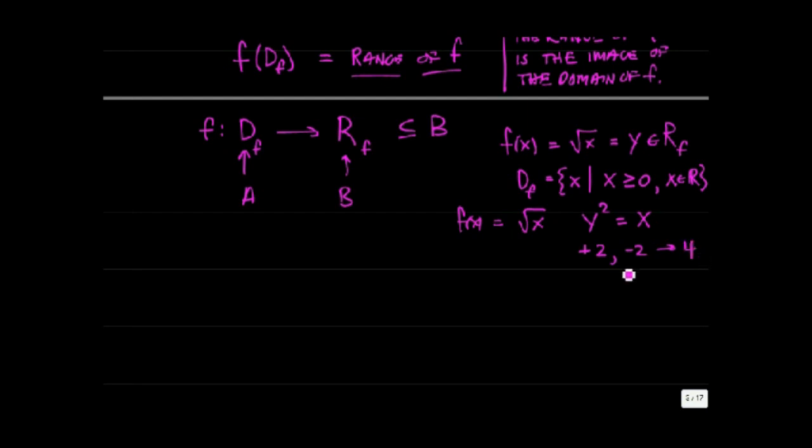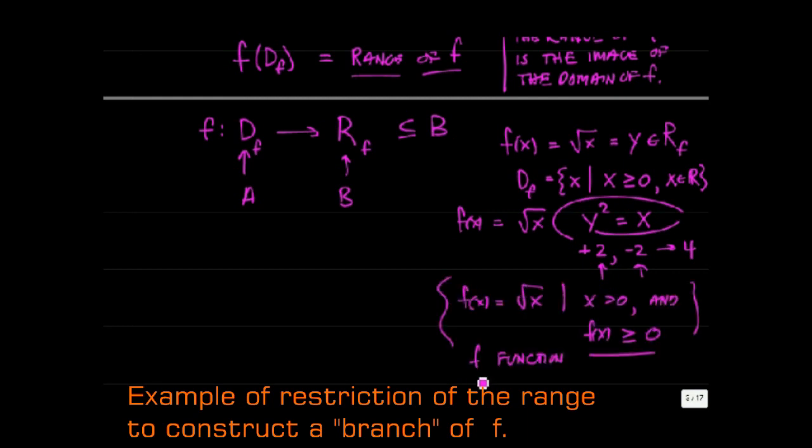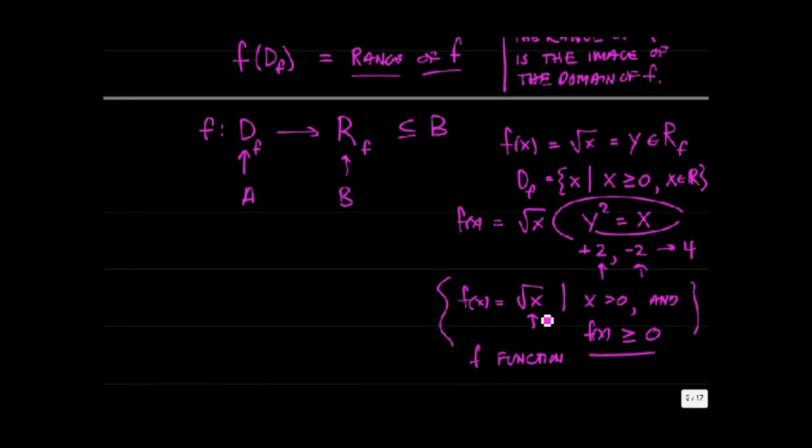But this has two possible solutions. The square of plus 2 and minus 2 are both equal to 4. Since we require that the function map elements of the domain to single elements of the range, we have to restrict the range of f to one or the other of these solutions to the equation y squared equals x. The definition of f has a restriction in the formula that assures you that you are going to get a single element in the range when you apply the formula, square root of x.